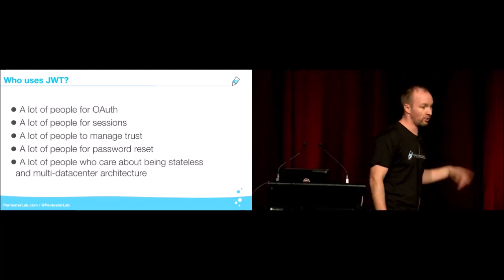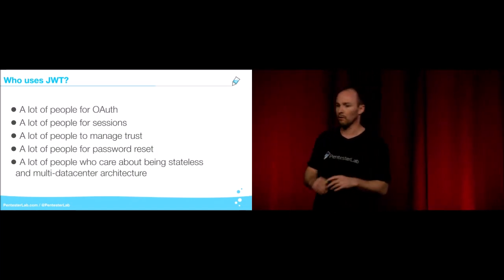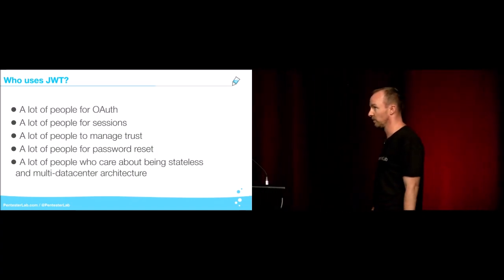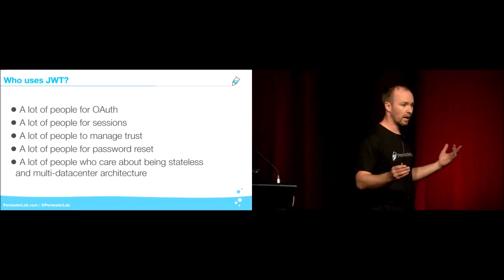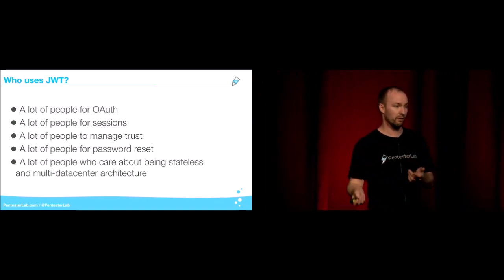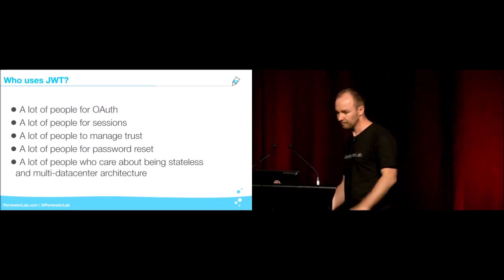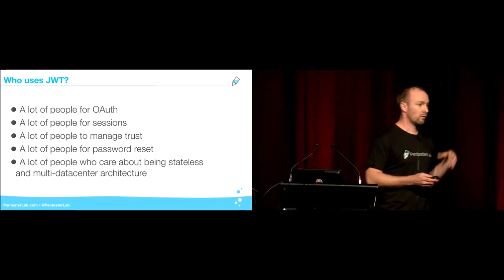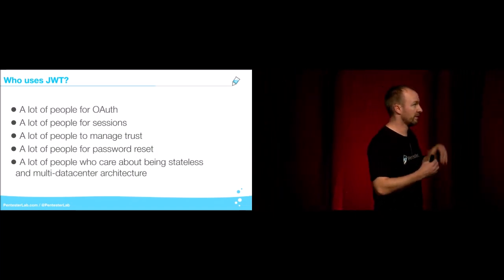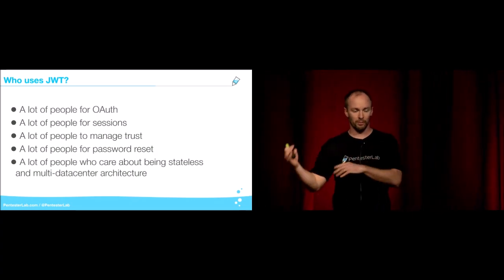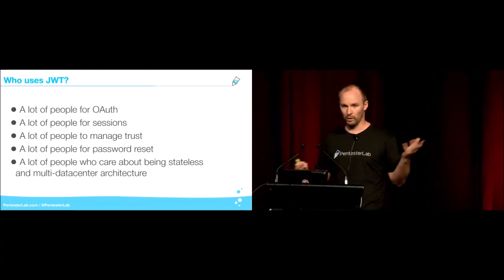So who is using JWT? Every day when you're browsing the web, you're probably using JWT and you don't know about it, because everything is going through cookies or HTTP headers or parameters. People use it a lot if they're using OAuth, for sessions, or to manage trust — to sign something and send it to someone and make sure no one tampered with it. People use it as well if they want to be stateless, so they don't have to share sessions across multiple systems or data centers.